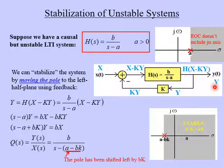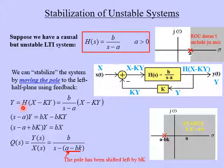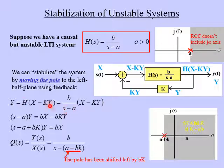Our output then is H times the input X minus KY, and that is equal to the output Y. So here is our system equation: Y equals H times (X minus KY). This equation came directly from the block diagram. Let's fill in our transfer function H equal to B over S minus A. At this point, let's multiply both sides by S minus A, the denominator.